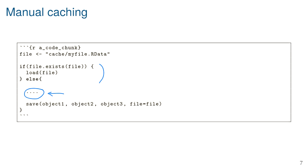This is so you only run the code when you have to. It's completely manual — if you decide some other part of the analysis has changed and you need to rerun, you just delete that file. If you have all caches in a cache directory, you can delete all files there to get a fresh start, run everything, and get results you know are correct.